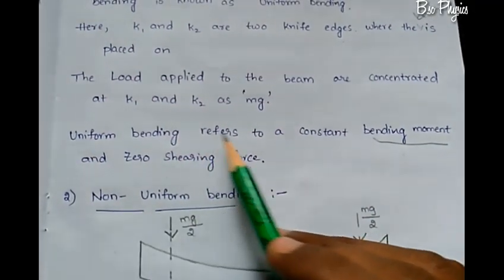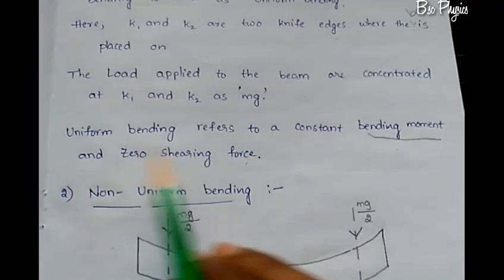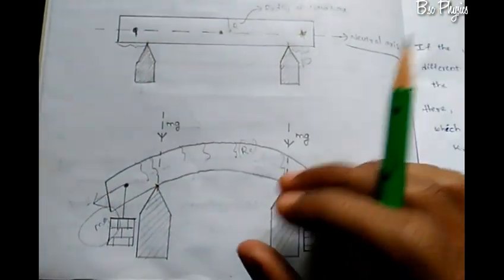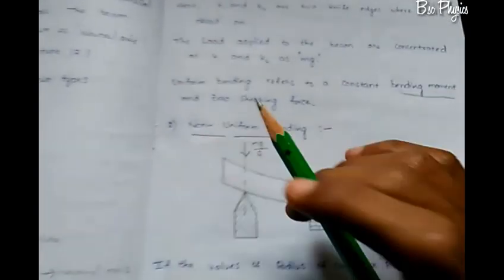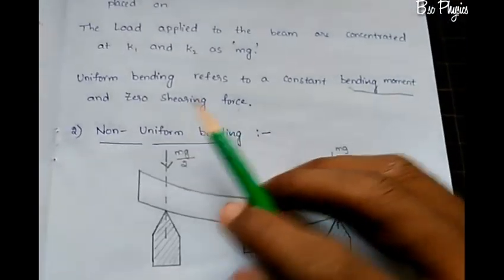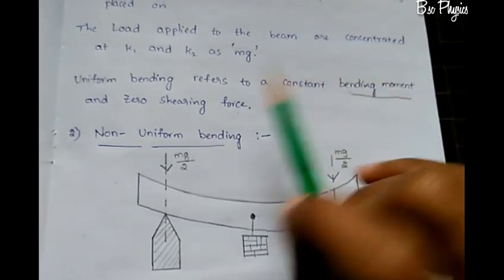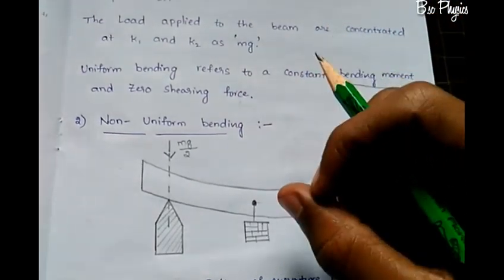Uniform bending refers to a constant bending moment and zero shearing force. You can see constant bending moment and zero shearing force — this will be covered further in the next video.